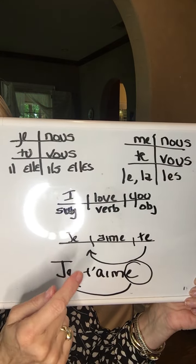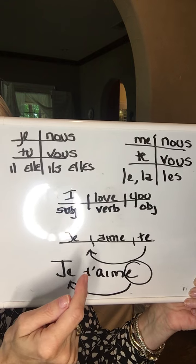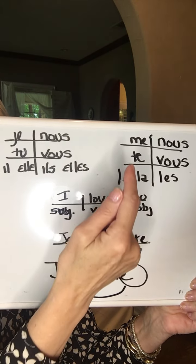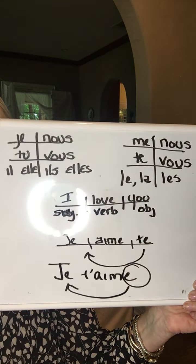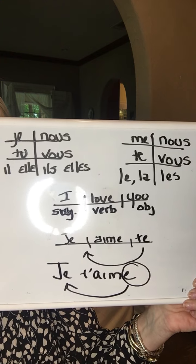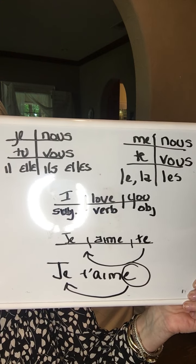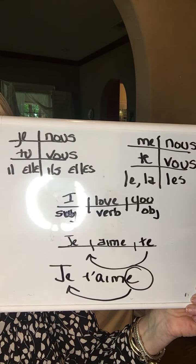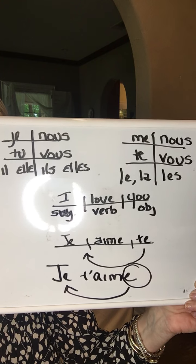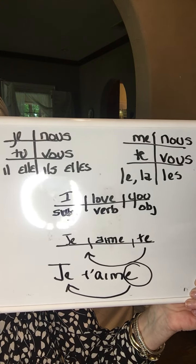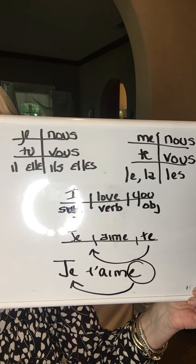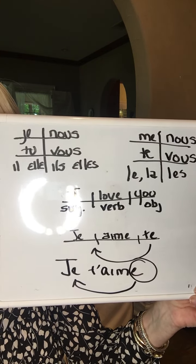You might also notice that instead of 'te,' it becomes 't' apostrophe — parce que le verbe commence avec un voyelle. The verb begins with a vowel. So we take off the e and use the apostrophe. D'accord?